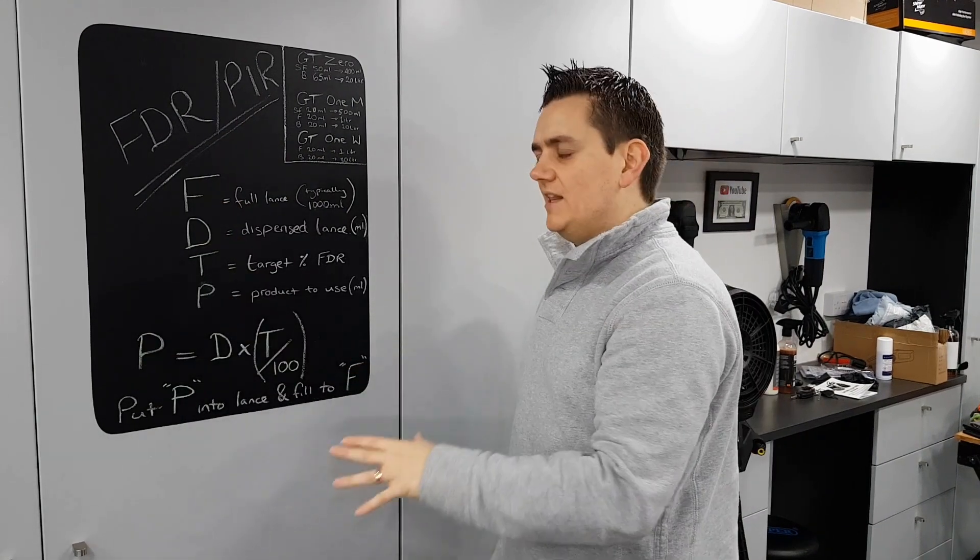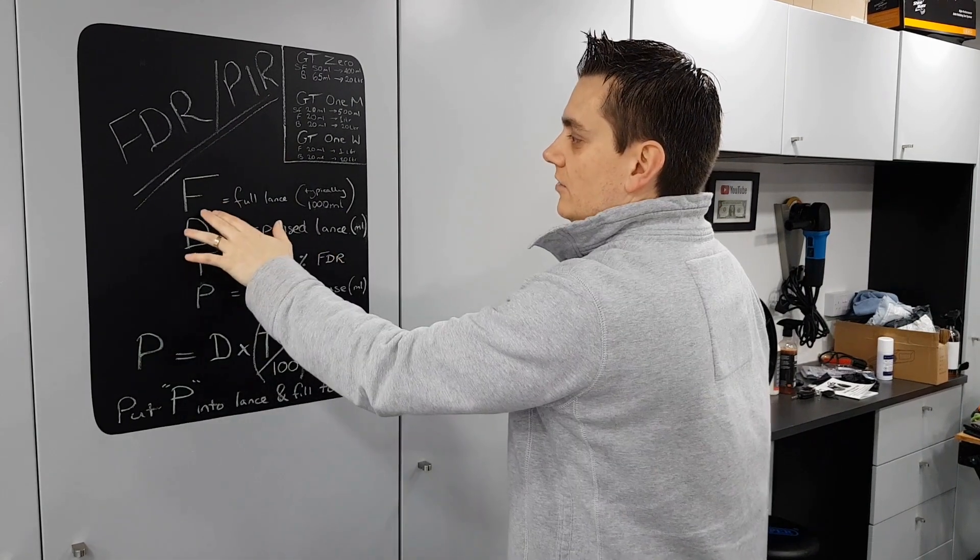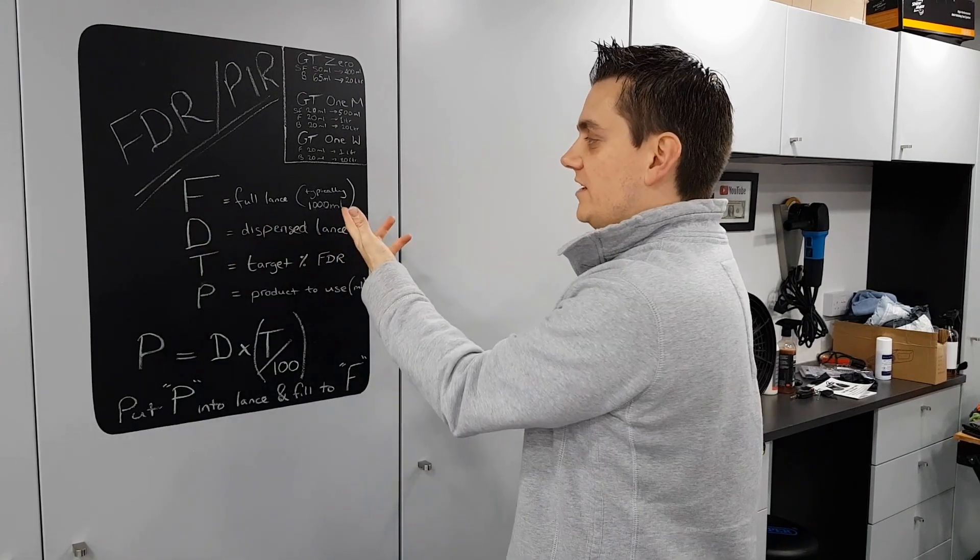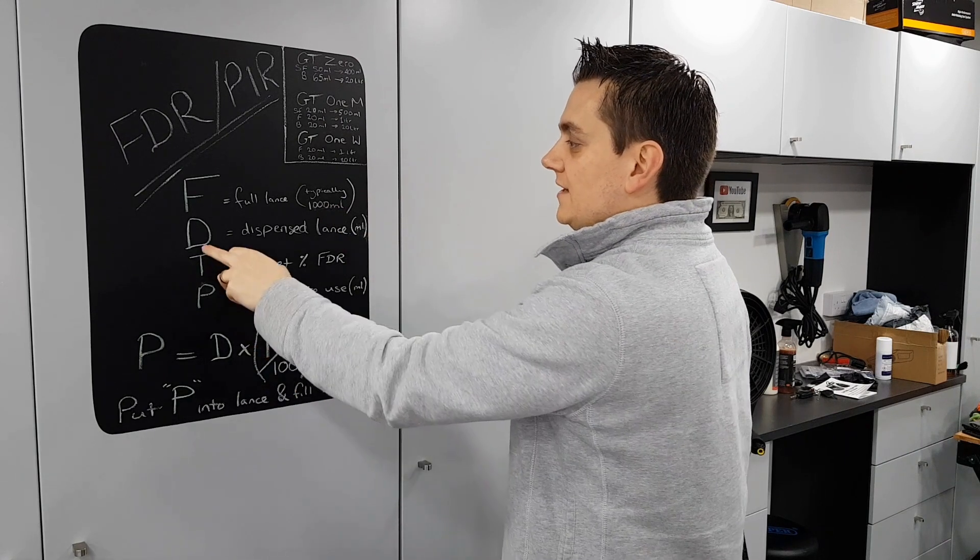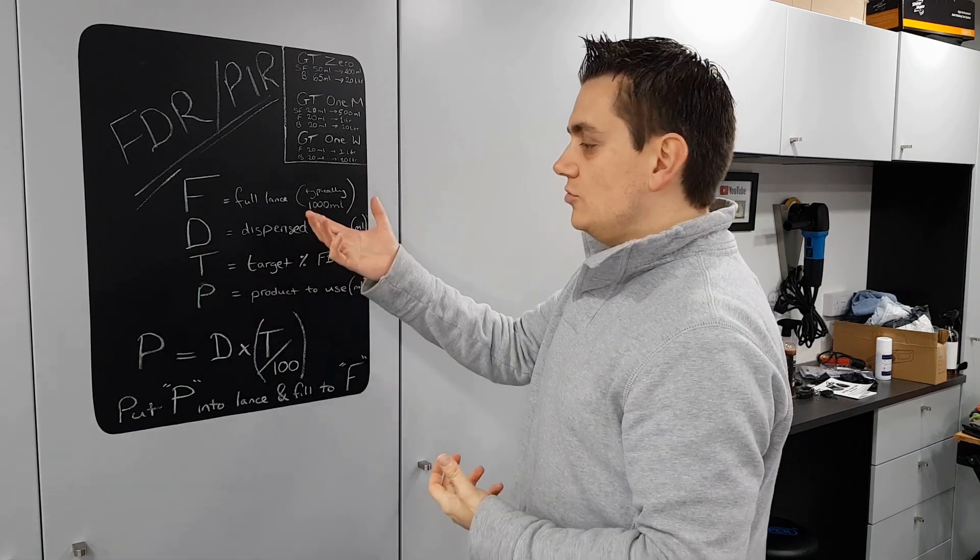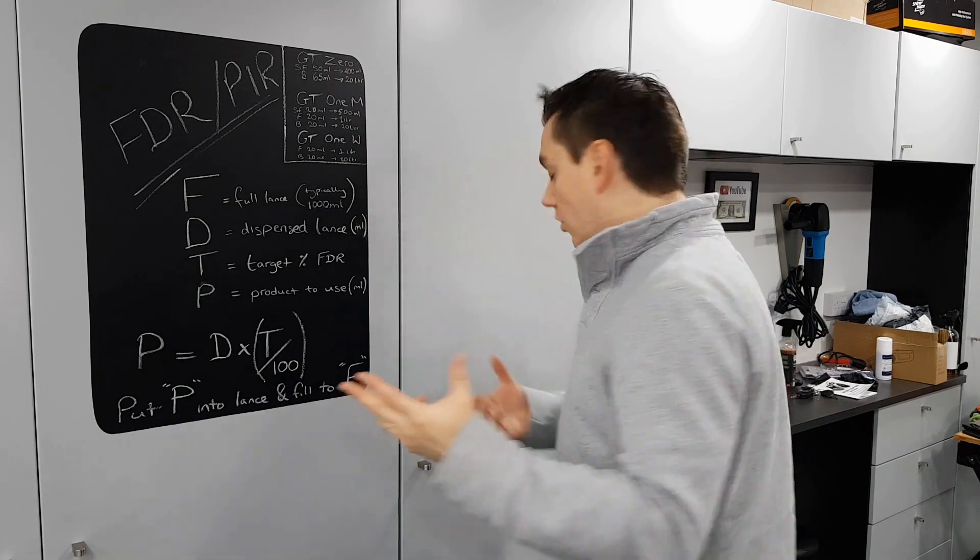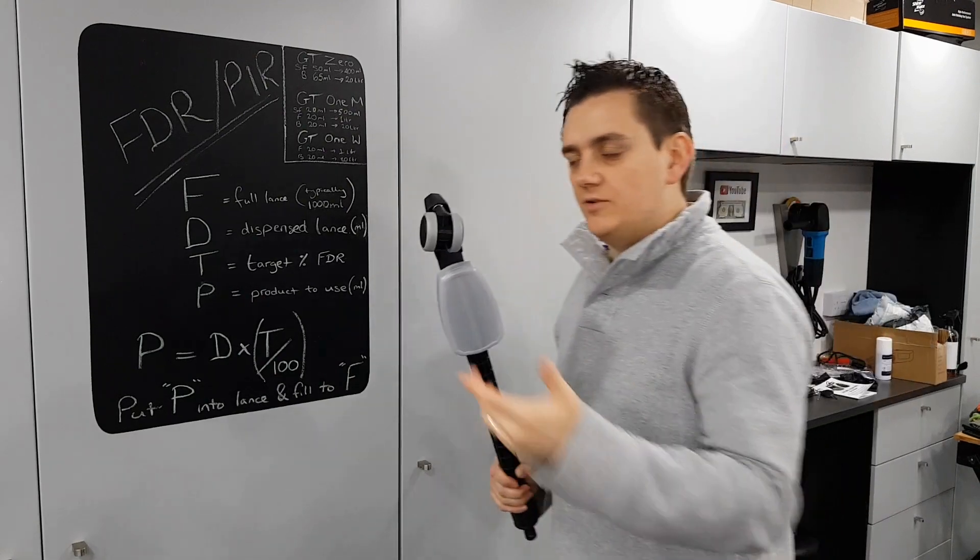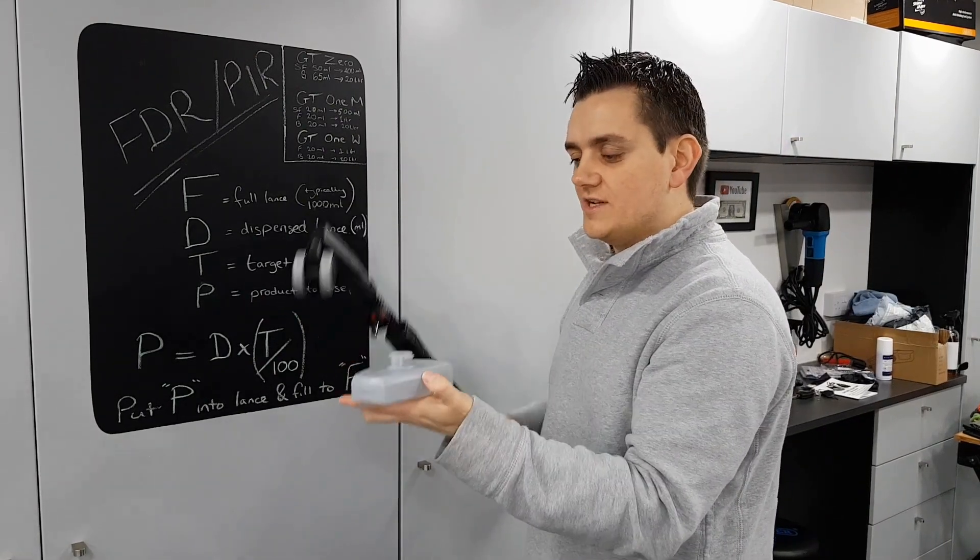So we've got some maths here on the board. These are just explanations and this is the formula you need to use, really really easy. So we take F being a full lance, typically one liter. We work everything in milliliters, so a thousand mil. D is the dispensed lance.